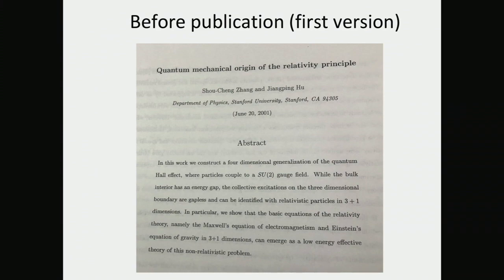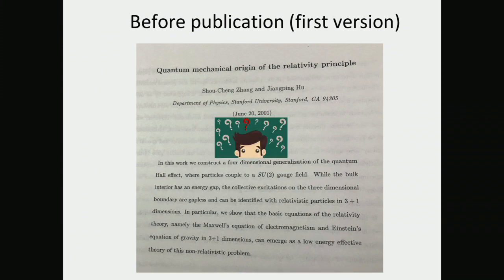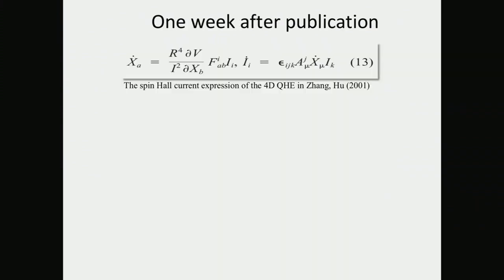The original title was 'Quantum Mechanical Origin of the Relativity Principles.' What happened was: I finished some derivation and sent it to him the previous night, then in the morning I got this paper back. I was completely blown away — it had nothing to do with my calculations. I was completely confused, even though I was involved in this work.